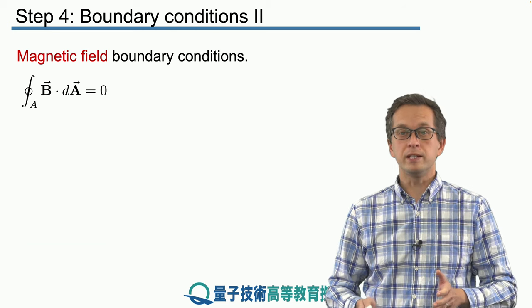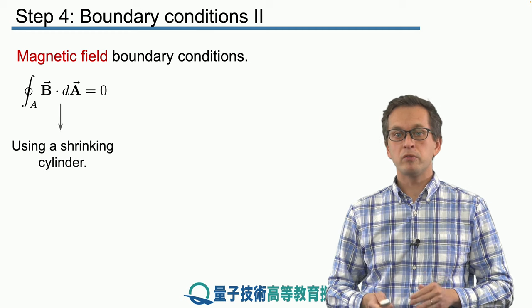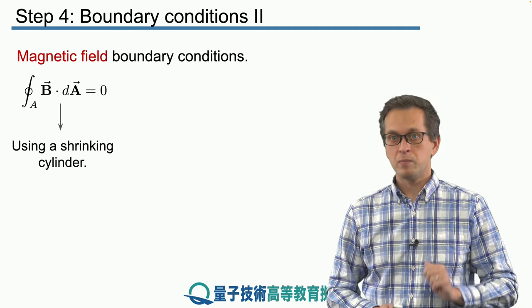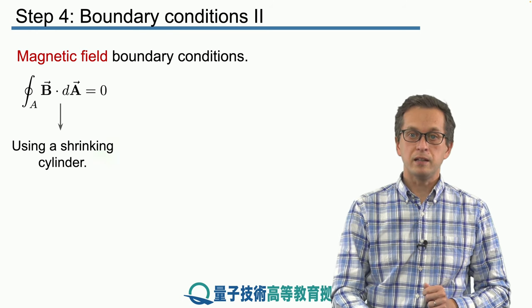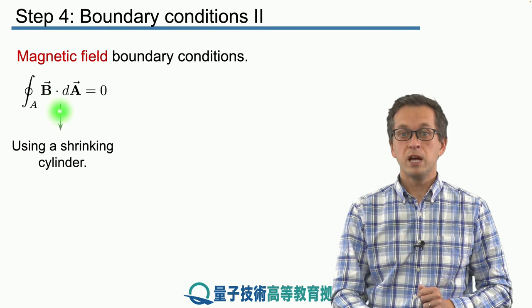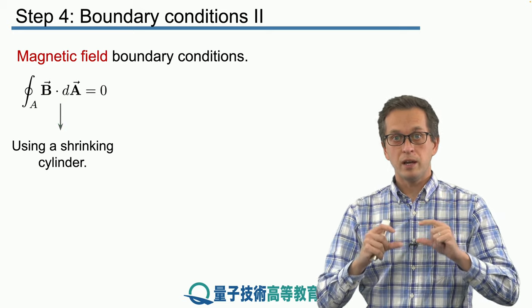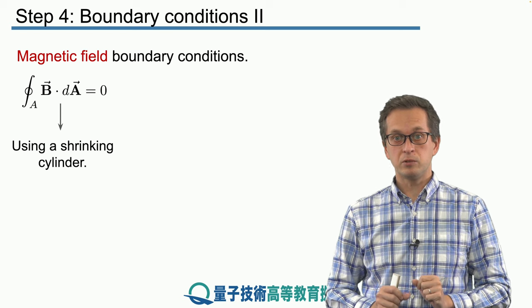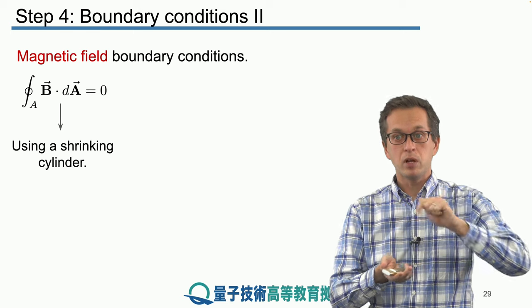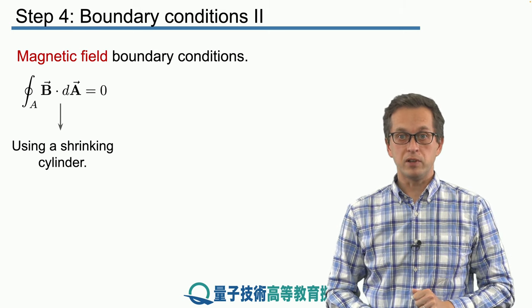Now, we can do the exact same thing for magnetic field. I'm not going to go in detail through the calculations because they are exactly the same with only minor differences. Again, the trick that we are going to use to evaluate this surface integral is to consider a cylinder where the top half is sitting in dielectric 1 and the bottom half is sitting in dielectric 2. And we shrink the height of the cylinder to obtain just a simple circular surface through which we evaluate the magnetic flux.